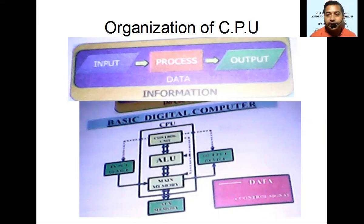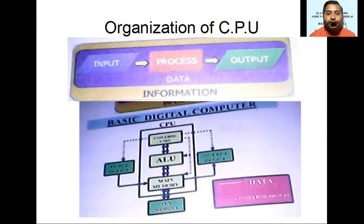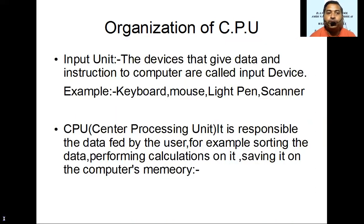The computer system is made up of three main parts: input, process, and output. This is the basic organization of the CPU.